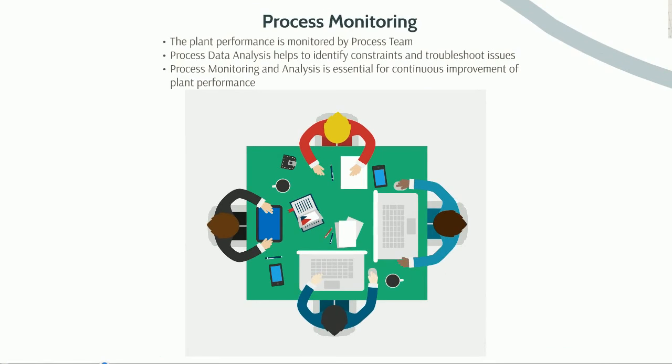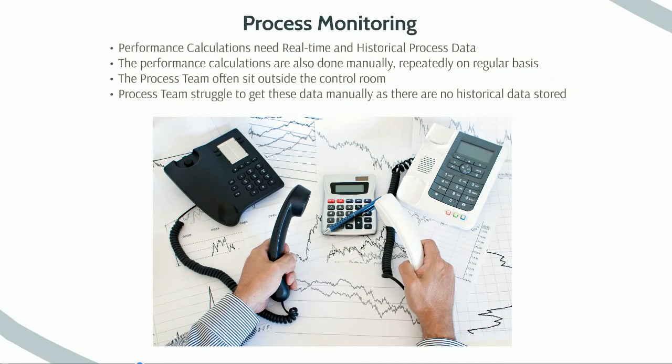The process team monitors the plant operation and performance by calculations and data analysis. Process teams identify the constraints and troubleshoot the plant problems. Process monitoring and analysis is essential for continuous improvement of plant performance. The performance calculations need real-time and historical process data, and are done manually, repeatedly on a regular basis.